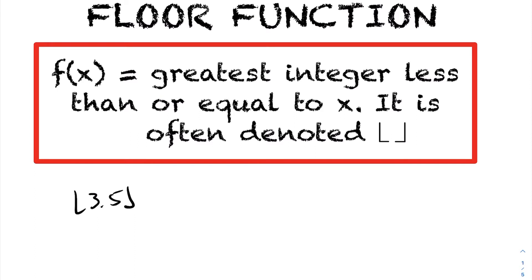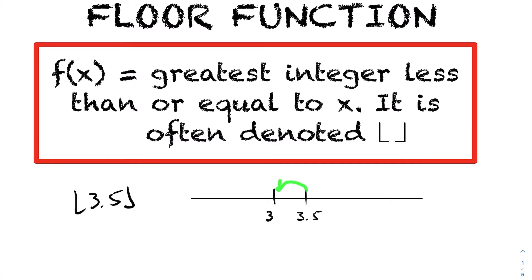Let's take a look at how that works. Let's say we want to take the floor of 3.5. If you go on your number line and go to three and a half, the floor is returning the integer that is less than three and a half with the greatest value. The first integer you encounter moving left on the number line is three, so the floor of 3.5 is three. It's not going to return two because the floor returns the largest such integer.